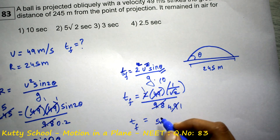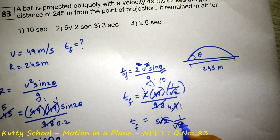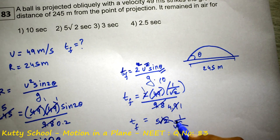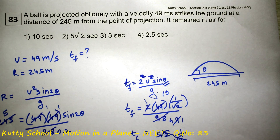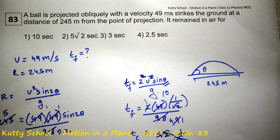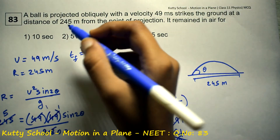10 / √2 simplifies to 5√2 × (√2 / √2), and after the √2 terms cancel appropriately, the time of flight is equal to 5√2 seconds.